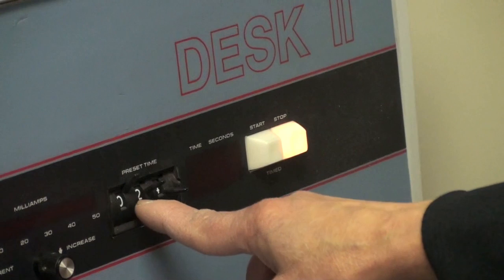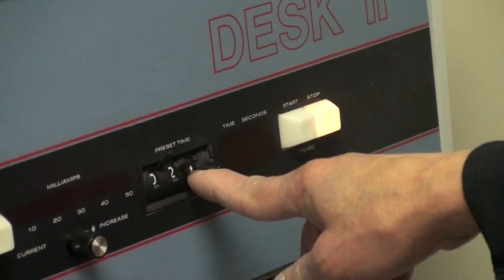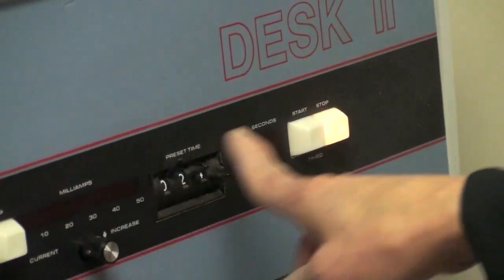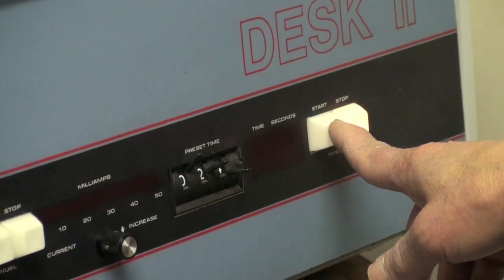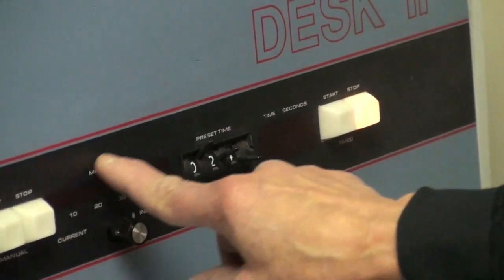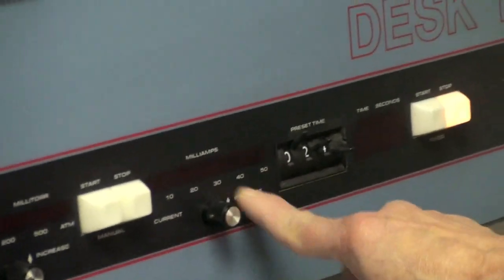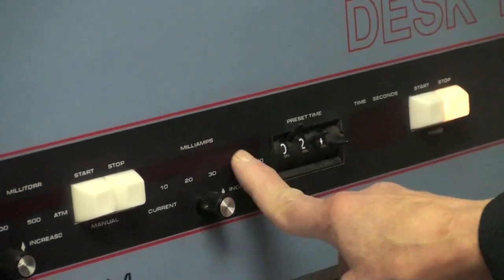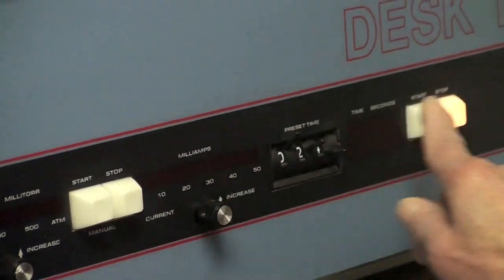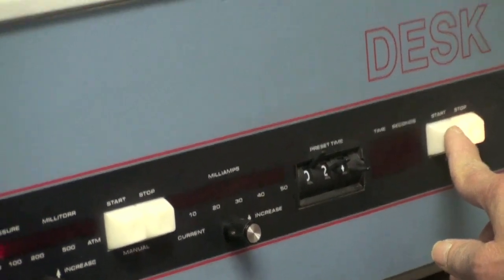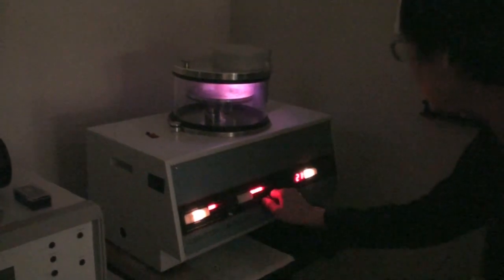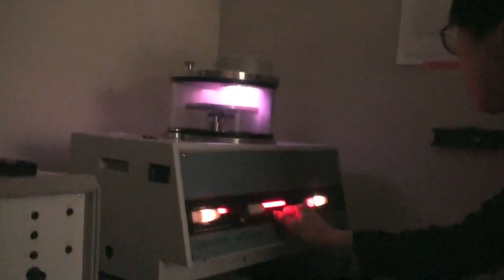So the next step is we're going to start it automatically. So it's going to time it start counting down from 24 to zero. And once you hit this start button, you have to increase the current to the cathode to 45. And that is the plasma.